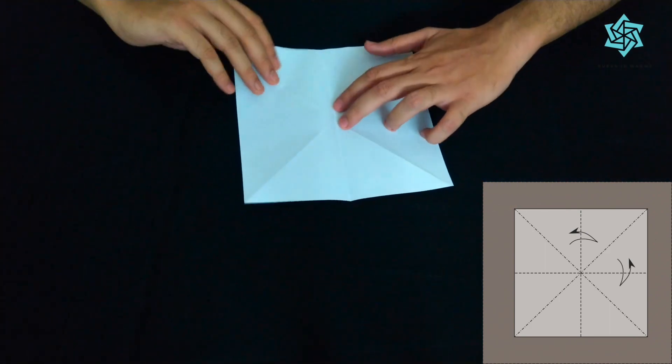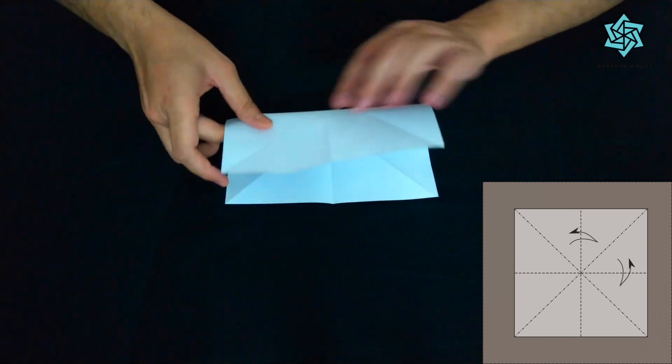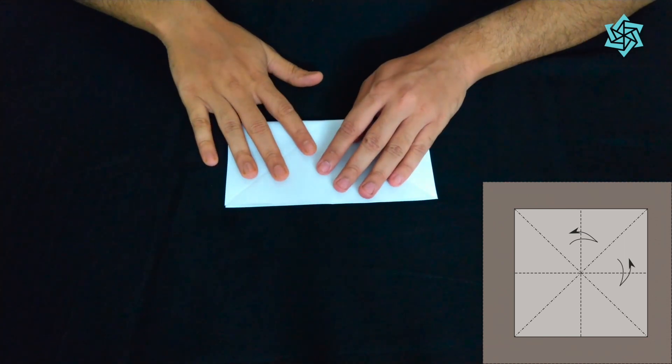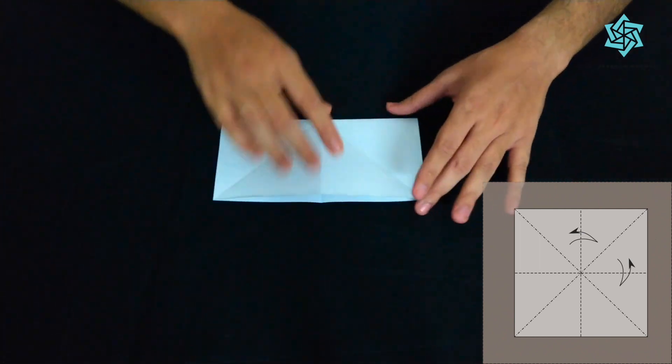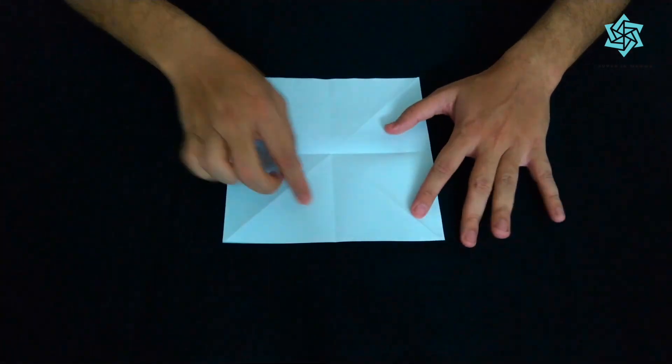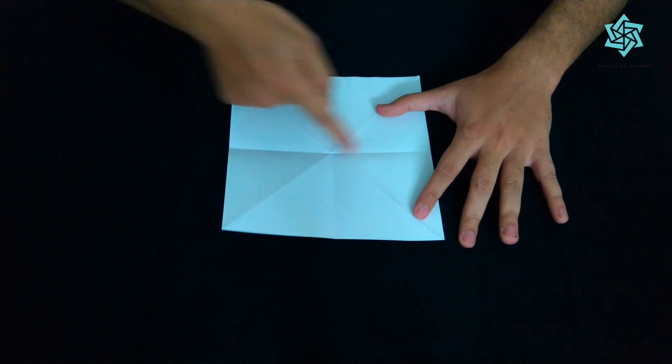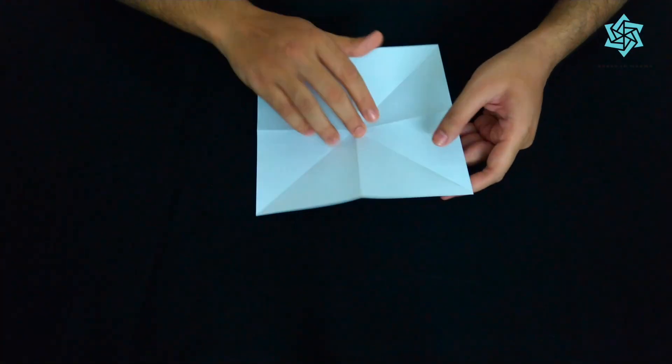Now for this one again we'll do the same thing, we'll put this here. You all can see that we have gotten a plus and if I turn this over we have gotten a cross.